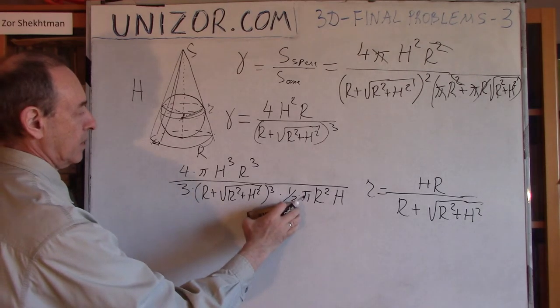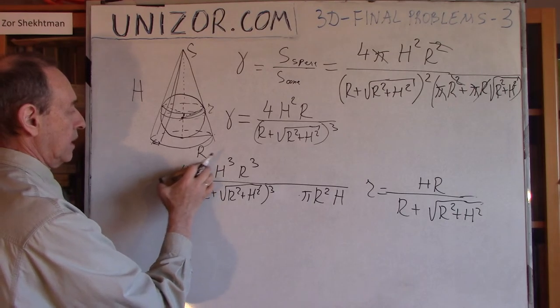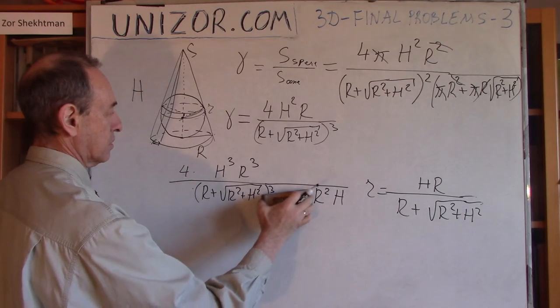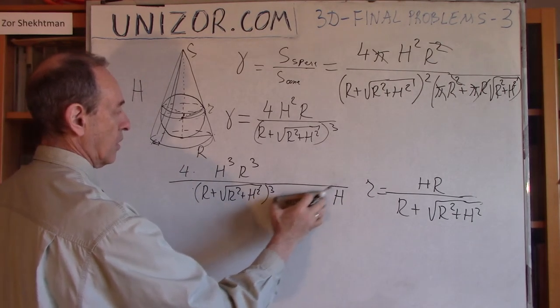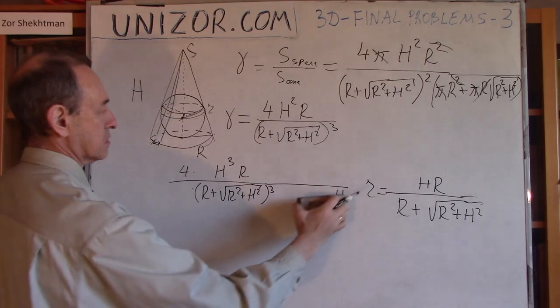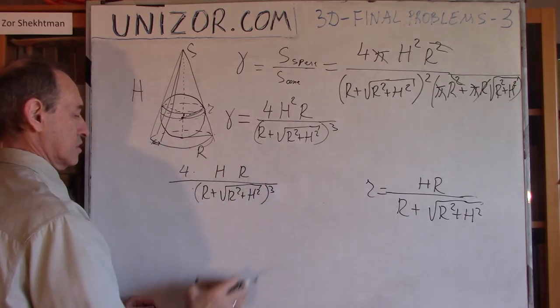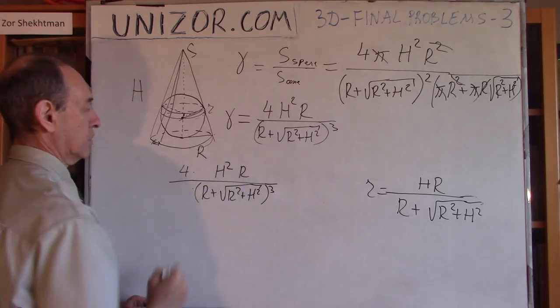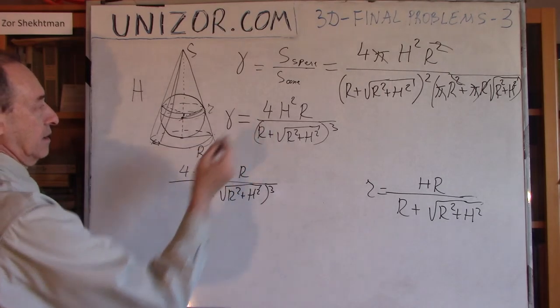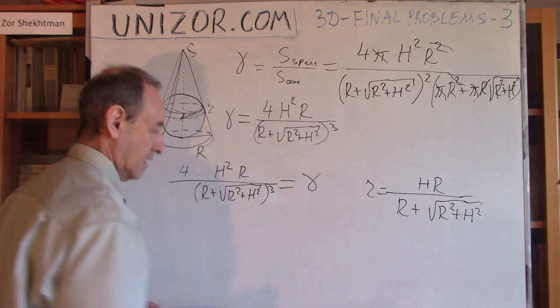Three and one-third can be reduced, π and π can be reduced, R² and R³ can be reduced, and H would be H². What do I have? Amazingly enough, it's exactly the same thing. As you see, the ratio of the volumes is exactly the same as the ratio of area of the surfaces between the inscribed sphere and the cone itself.